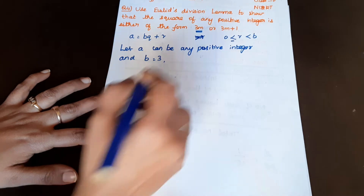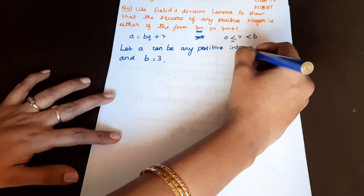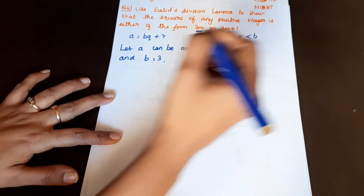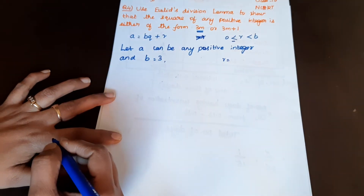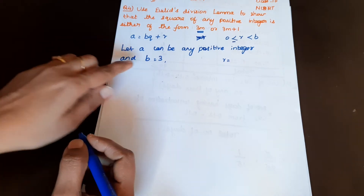Now r is the remainder. What are the possible values of r? Since b equals 3, r can be 0, 1, or 2.